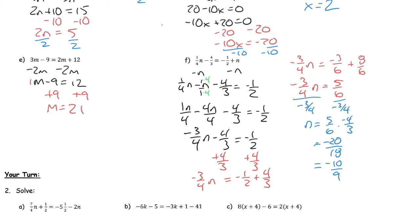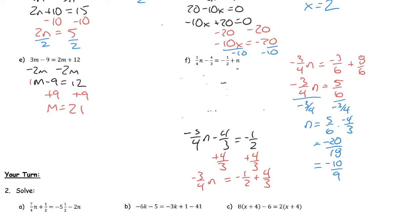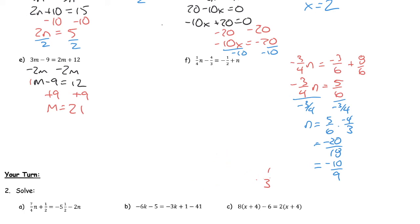That was a lot of work, but that one could have been done a fair bit quicker. I'm going to show you a quicker way to do this question. The quicker method is to multiply right off the bat by the lowest common multiple of the denominators — 4, 3, and 2 — which all have a multiple of 12.